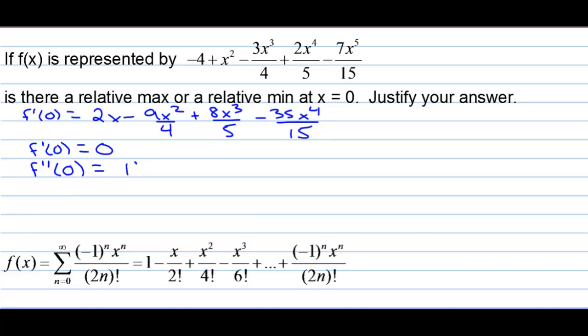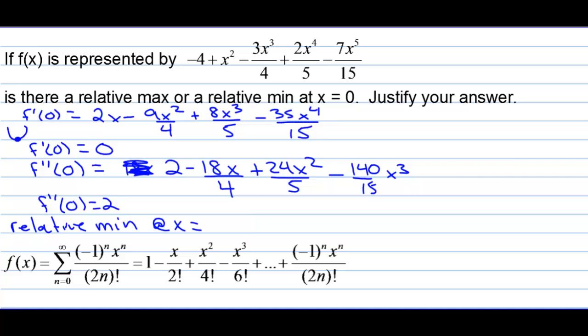The second derivative would be 18x. Oh, excuse me. I need the 2. 2 minus 18x over 4. We won't worry about reducing. It's not really that crucial. Now, we can keep going, but we already kind of know the answer. We have 140 over 15x to the third. Now, if you plug 0 into that, you get 2. So, the second derivative of 0 is 2, which means the function is concave up. And right there, the first derivative is 0, so we have that horizontal tangent line. So, we have a relative minimum at x equals 0, because first derivative is equal to 0, and second derivative is positive.